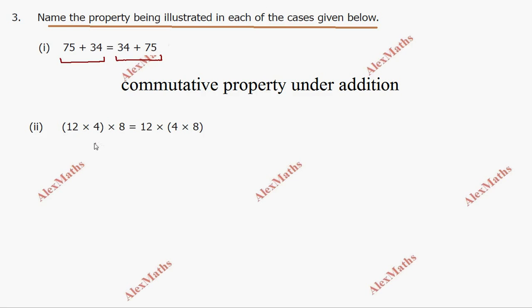Subdivision 2: three numbers are multiplied with the same order but with different bracket groupings — first number bracketed, then last number bracketed. This is the associative property under multiplication.